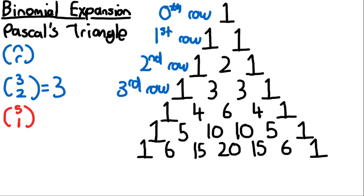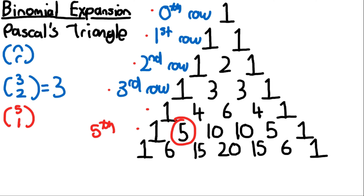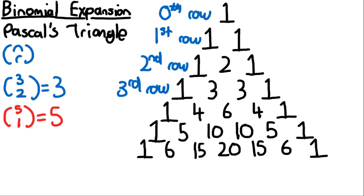Let's do another example: find the value of (5,1). It's going to be the fifth row — row zero, one, two, three, four, five — and it's one across. Zero across is the start, and one across is the next value. So (5,1) equals five. Let's do one more example: (3,0) is the third row and zero across, which is the value right at the start, so (3,0) equals one.